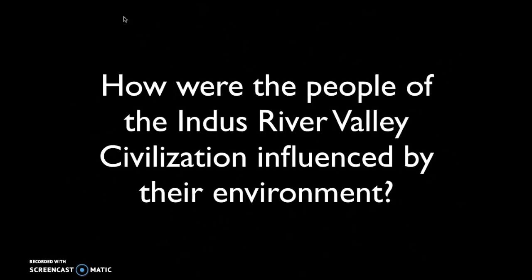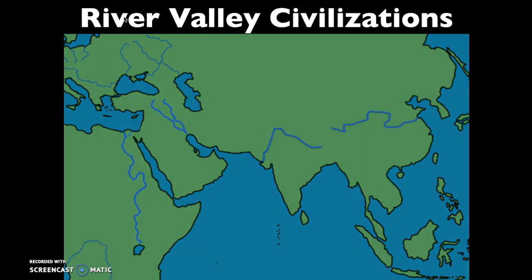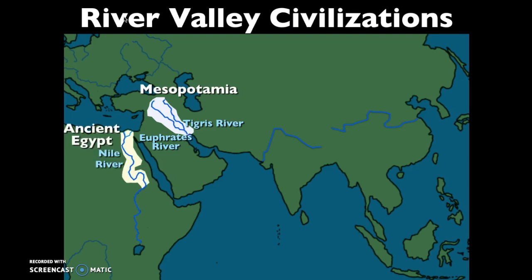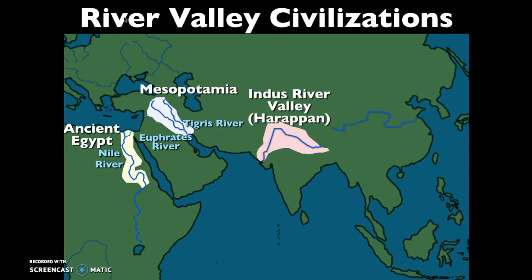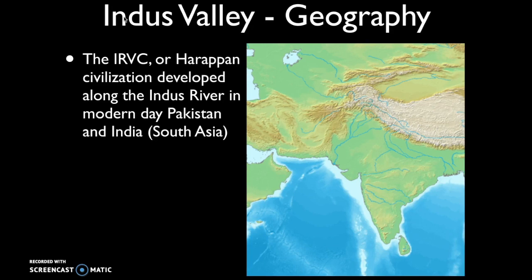Turning to that first question — how are the people of the Indus River Valley Civilization influenced by their environment? It's important to remember the role that rivers played in the formation of these first civilizations. We talked about Mesopotamia and the importance of the Tigris and Euphrates River, and in Egypt the importance of the Nile River. Rivers provided fertile soil and good farmland.